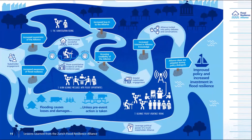At the bottom you see a very direct path, and between them you see what happens if you don't do this work — which is flooding causes losses and damages unless pre-event action is taken. That's where we're trying to get people to focus: let's take action before events occur so that we don't experience those damages and impacts, or at least they're less severe and we can recover more quickly.